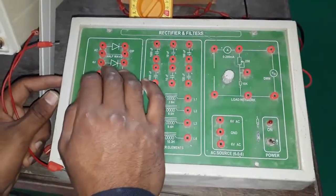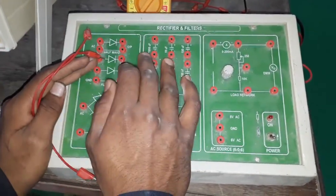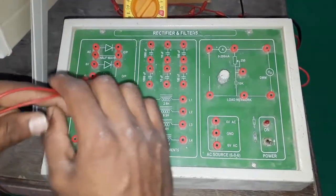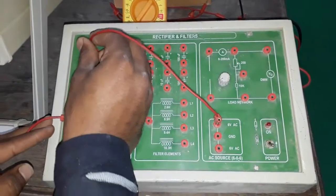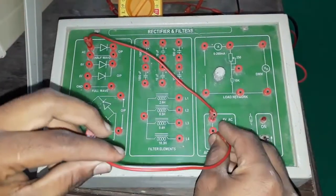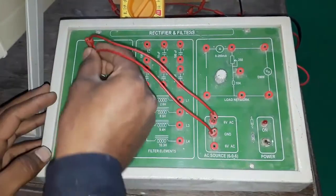This is a rectifier and this is a half wave rectifier. I am using filters with half wave rectifier and doing the experiment. I am applying six volts from AC source to half wave rectifier and this is the ground. I'm applying to ground with half wave rectifier.